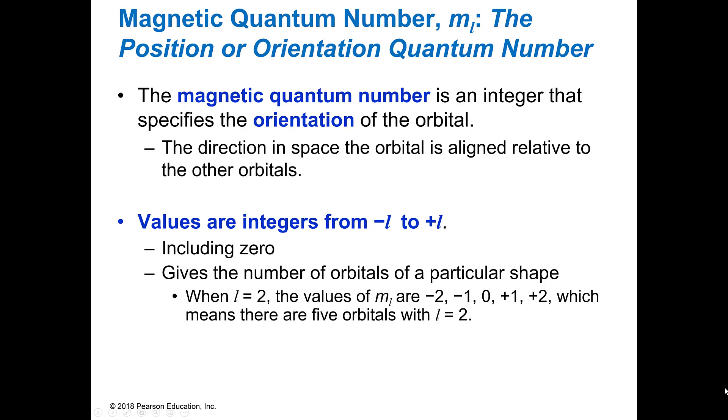So the magnetic quantum number is an integer, and it specifies the orientation of the orbital. So this is where we're saying, is it on the X, Y, or Z axis? Which plane is it poking into? And the values are negative L to plus L, and it does include zero.